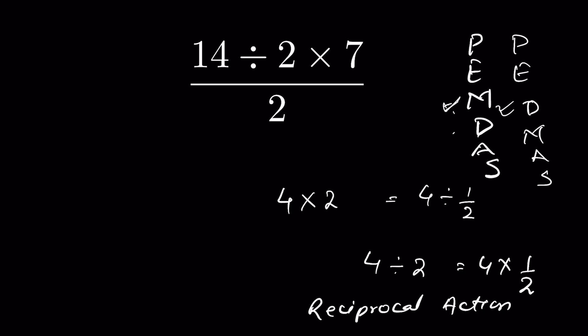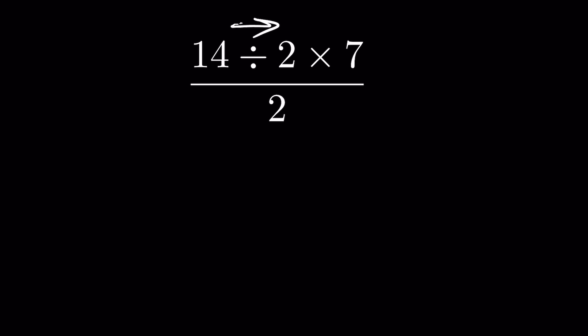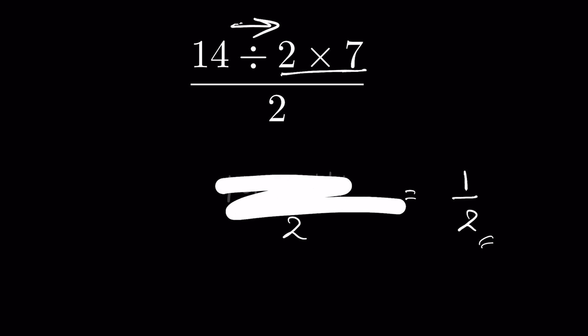Therefore, what people do is they take M of PEMDAS and do multiplication first. That means 14 divided by 2 times 7 is 14, then upon 2, then 14 divided by 14 is 1 upon 2. In that case, 1 upon 2 is the answer, but this is not how this question will be solved.